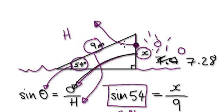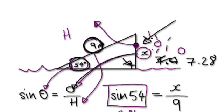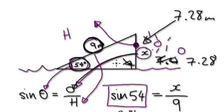So if you're given a triangle — remember it has to have 90 degrees — and this is 54 degrees and this is 9 meters, then this length here has to be 7.28 meters. I know it sounds weird, but watch the next video. I will reiterate — just do it a few times and it will make sense.